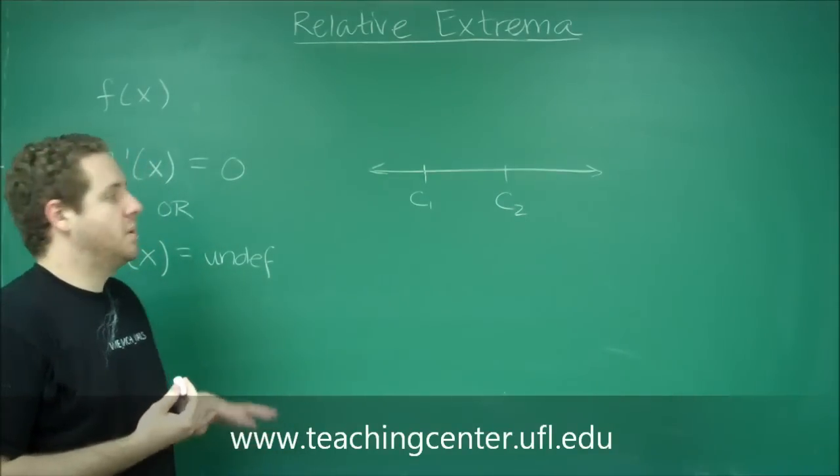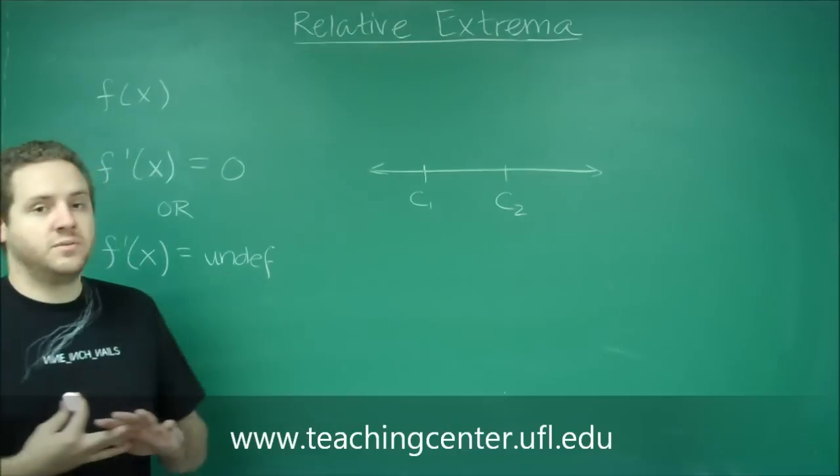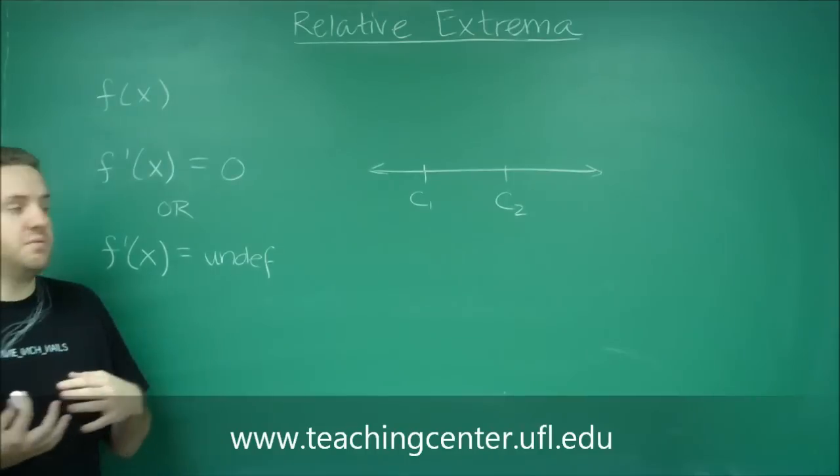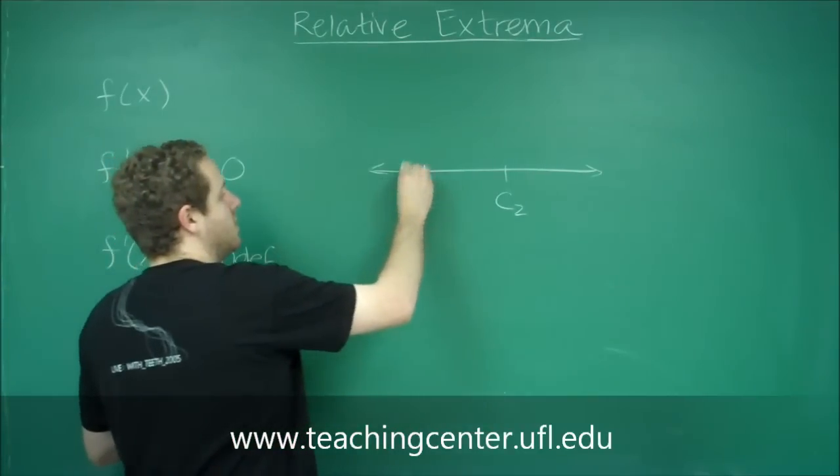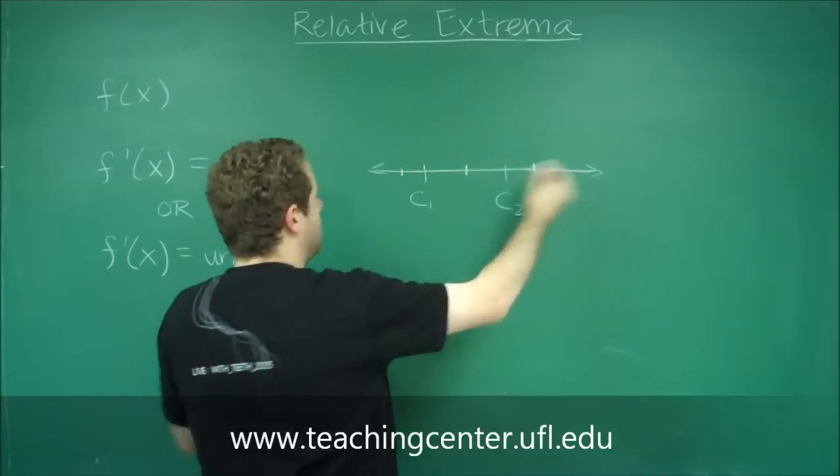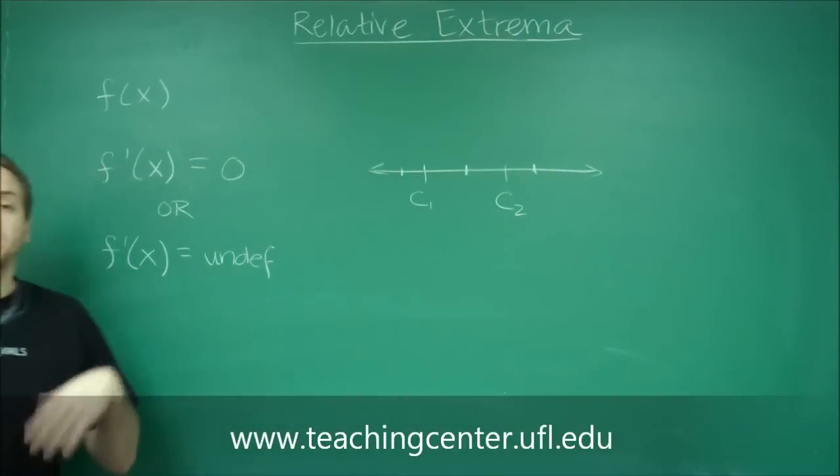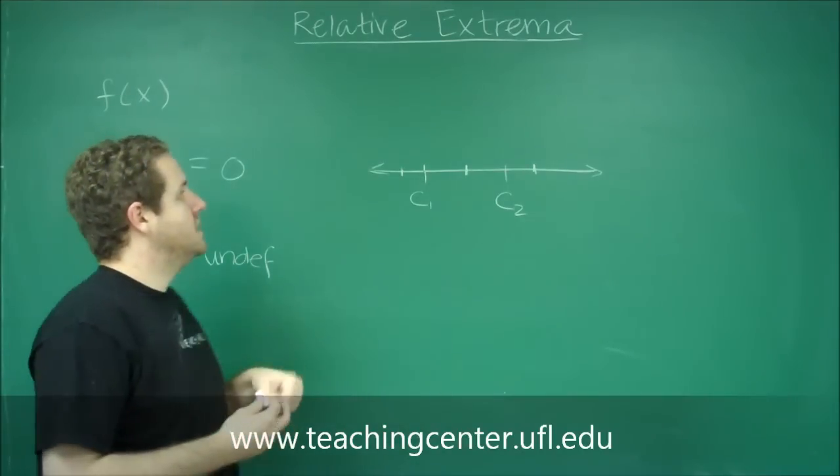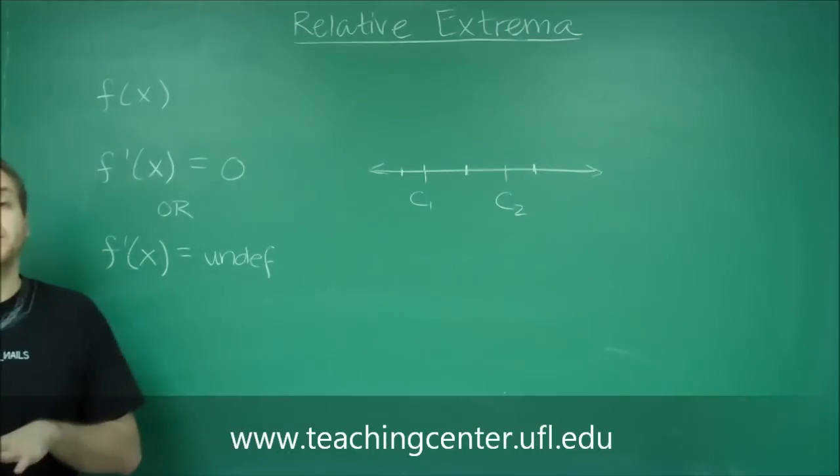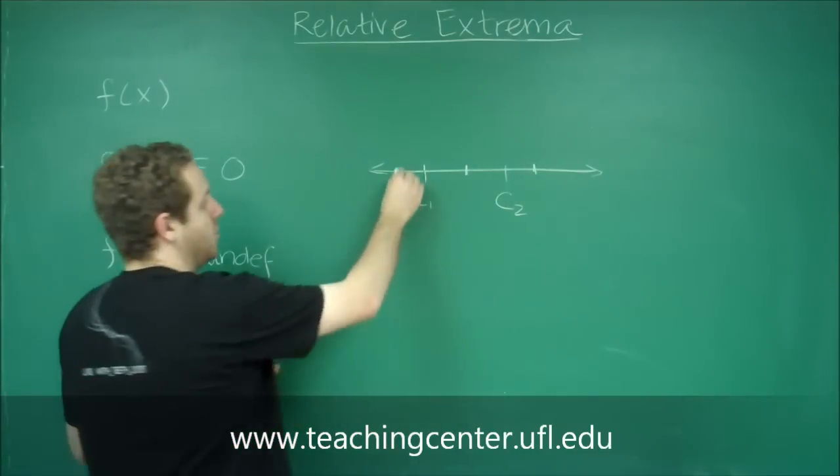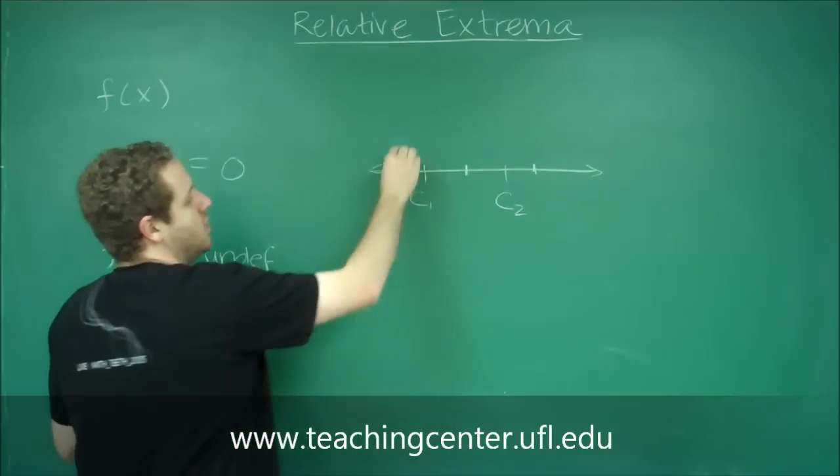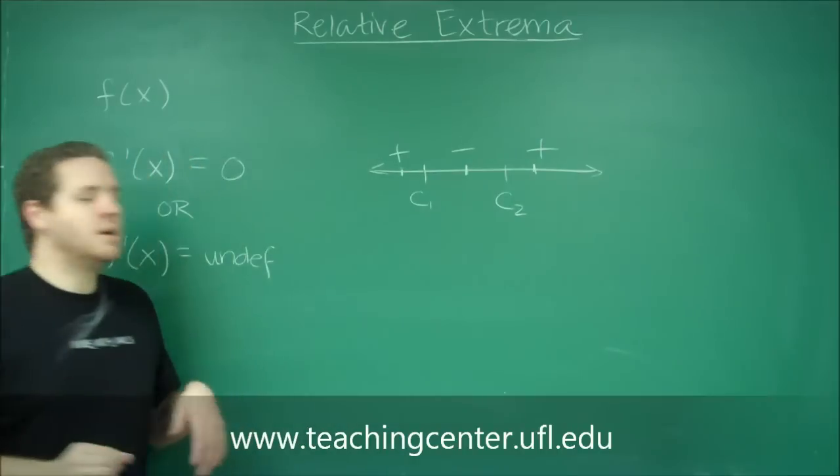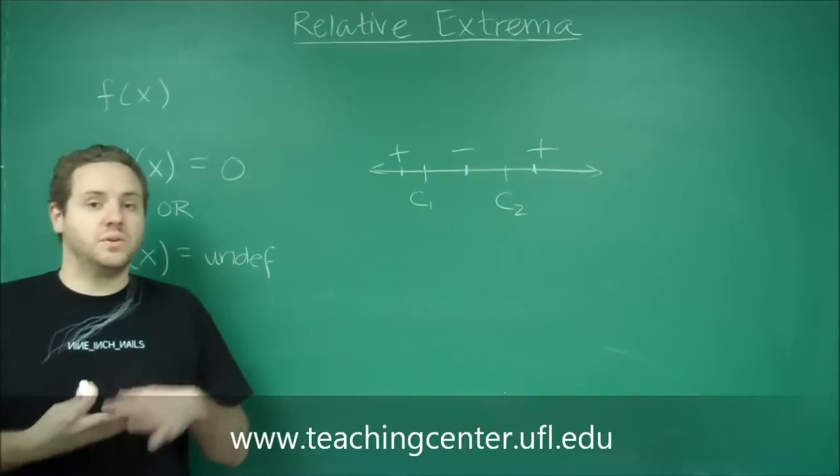And then the last thing you want to do is you want to plug in numbers in each range on this number line into your derivative. So you need to pick a number here, a number here, a number here, and if you had more critical numbers pick numbers in the rest of the ranges. All you need to do is try them in the derivative and see if you get positive or negative values. So let's say we got something like when we plug in this number to the derivative we got a positive value, and here we got a negative, and here we got a positive. We're ready to determine where our local extrema are.